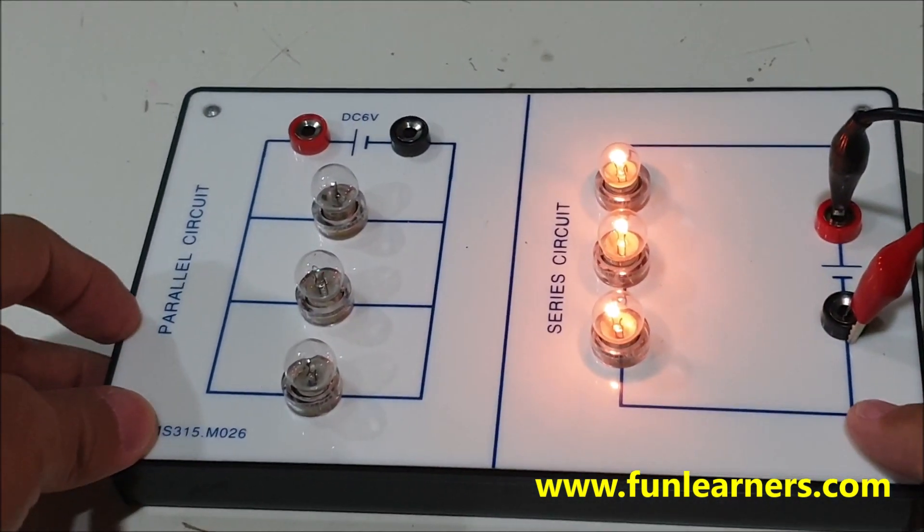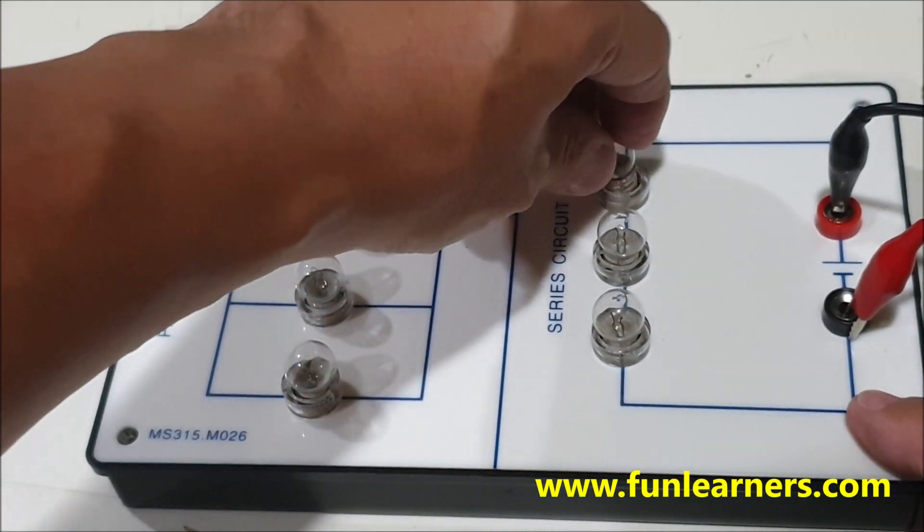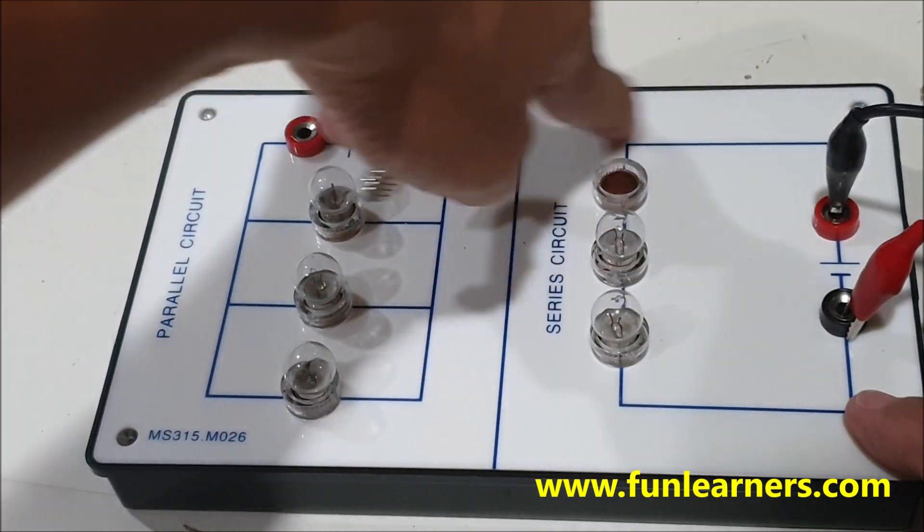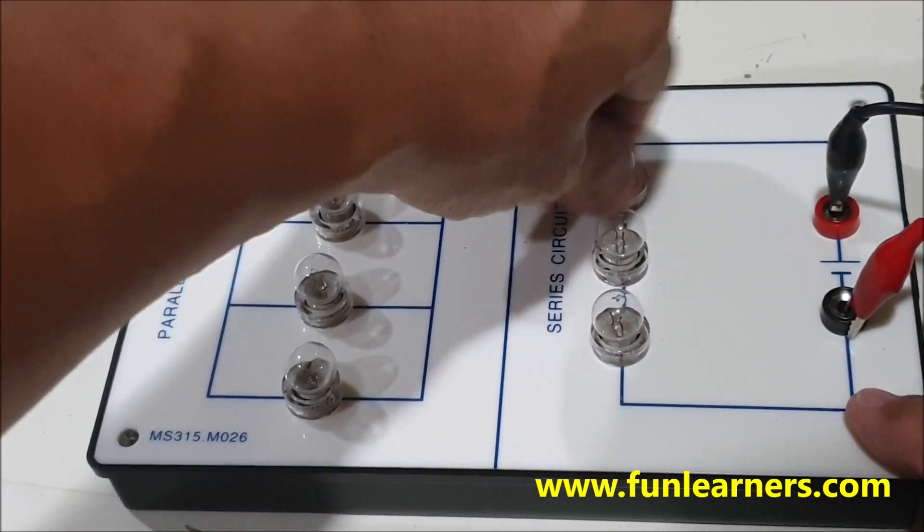For a series circuit, when you open up one of them, all the rest will not light up because there's an open circuit here. When you take out any one of these light bulbs, you create an open circuit and the rest will not work. Let me take out the whole thing.